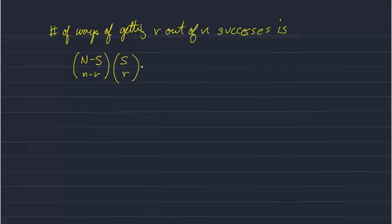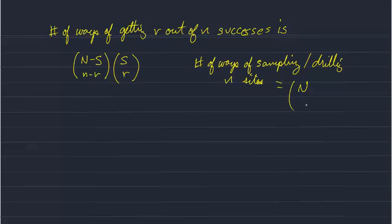That gives us the number of ways we can achieve that result, but we want the probability. To get the probability, we divide that by the number of ways we can sample N sites. We have a total of capital N sites, and the number of all possible results if we drill N times is capital N over little n.